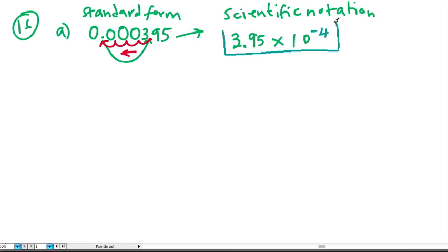This is our answer for the first part of the question. Remember we always have a number between 1 and 9.9 recurring, we always have the multiplication sign, and we always have 10 to some exponent. This is a negative exponent because the point moved to the left and because the number is very small.